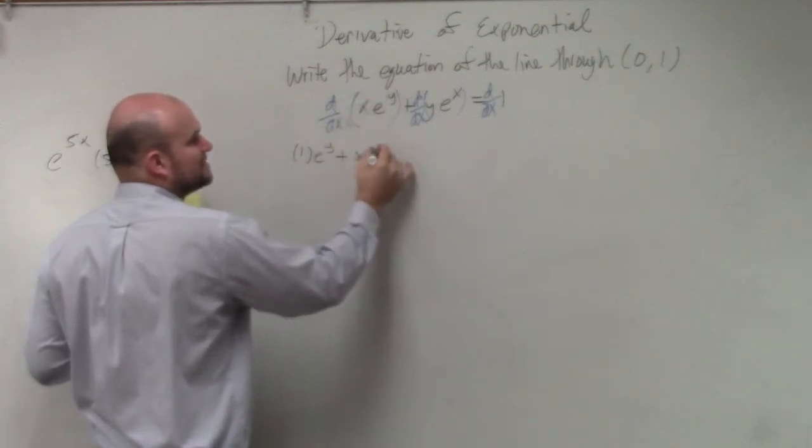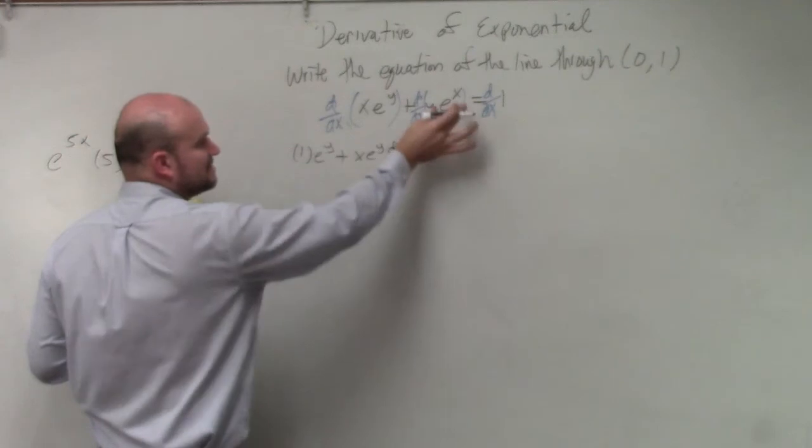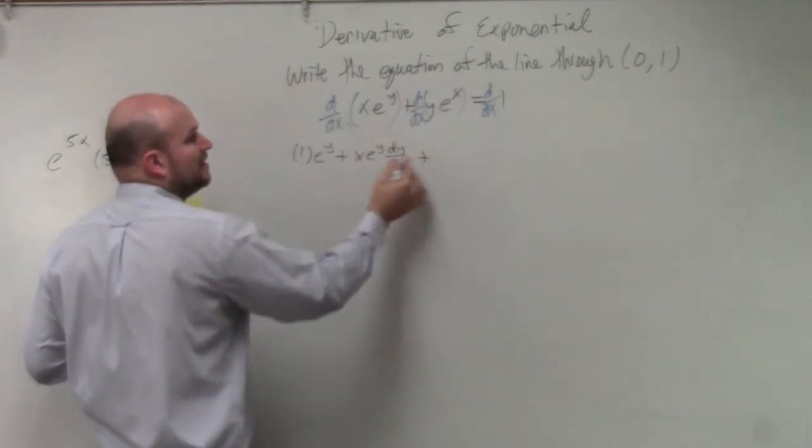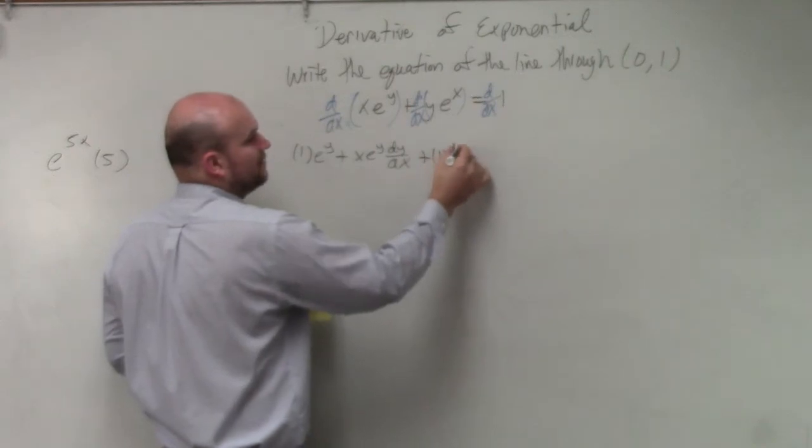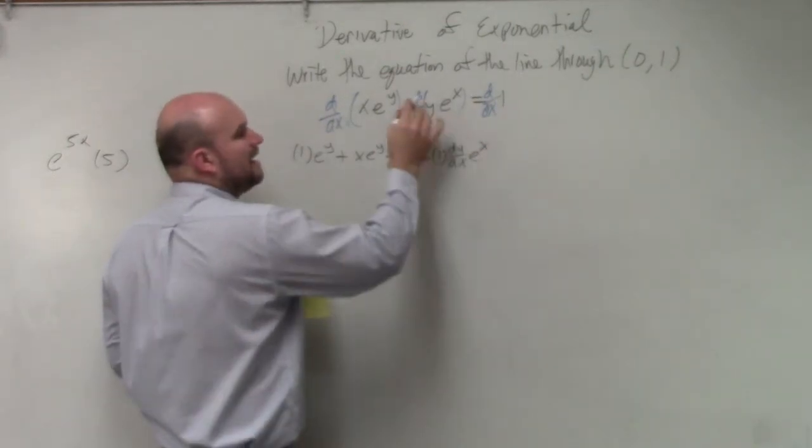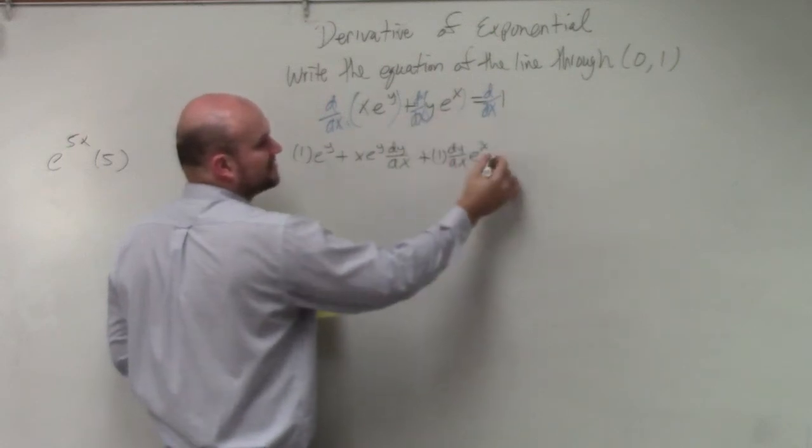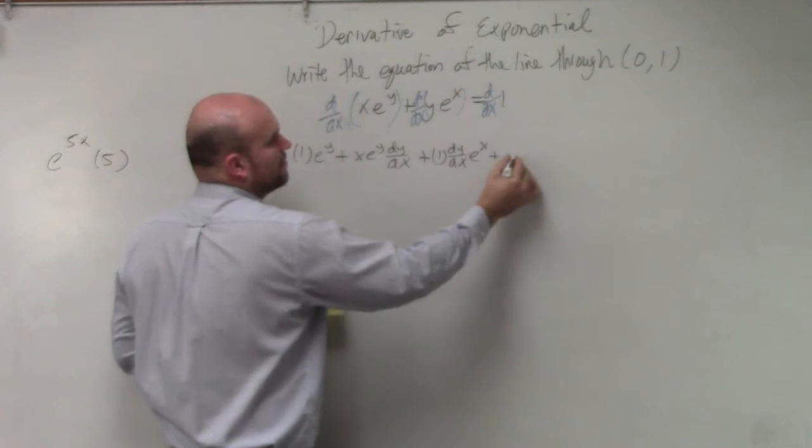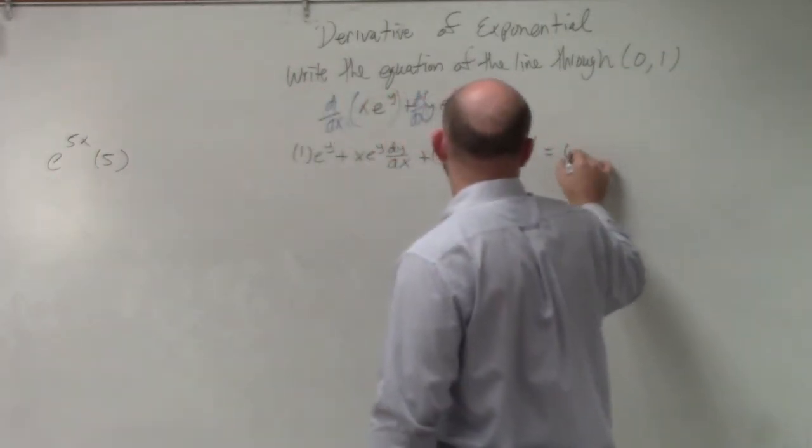Derivative of e to the y is just e to the y dy dx. Plus, derivative of y is going to be 1 dy dx times e to the x. And then the derivative of the second one is going to be plus y e to the x equals 0.